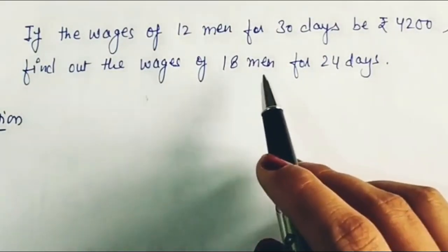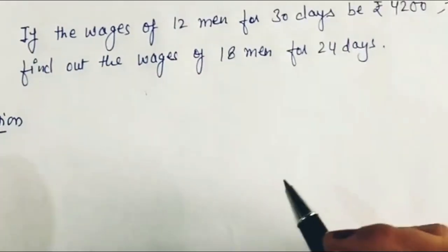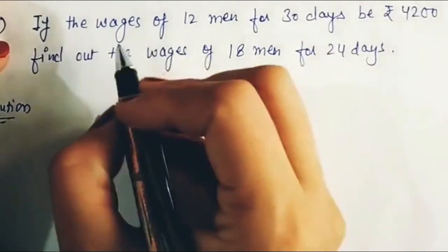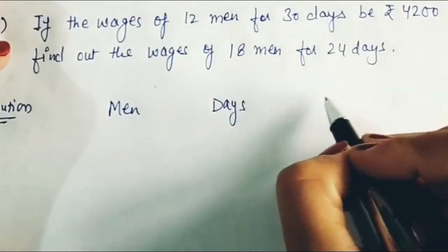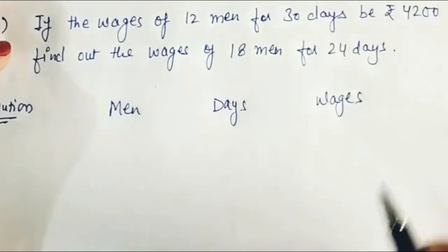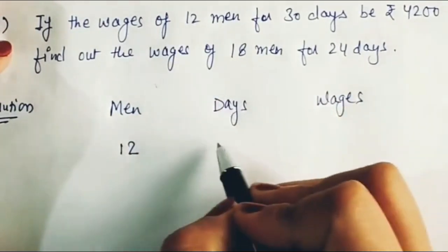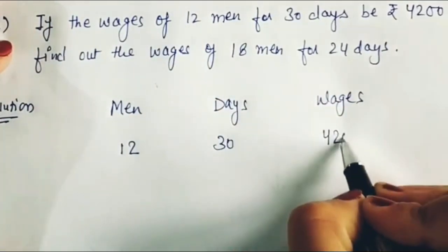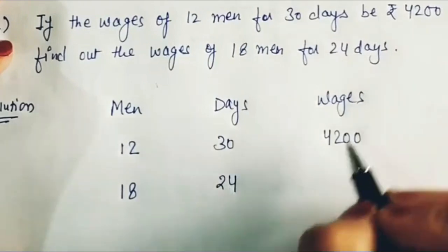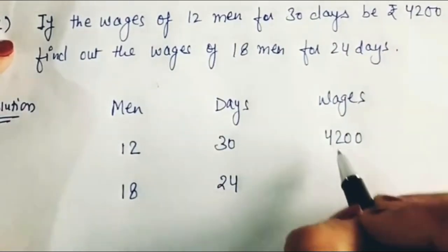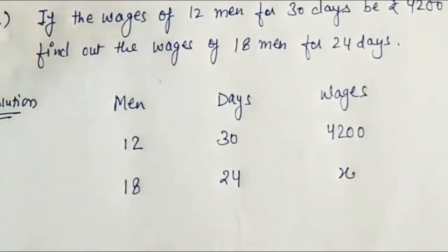We have to find out the wages for 18 men working for 24 days. First of all, we will note down all the quantities: men, days, and wages. 12 men working for 30 days get Rs. 4200, and we have to find out for 18 men working 24 days how many wages they will get — we'll consider it x.